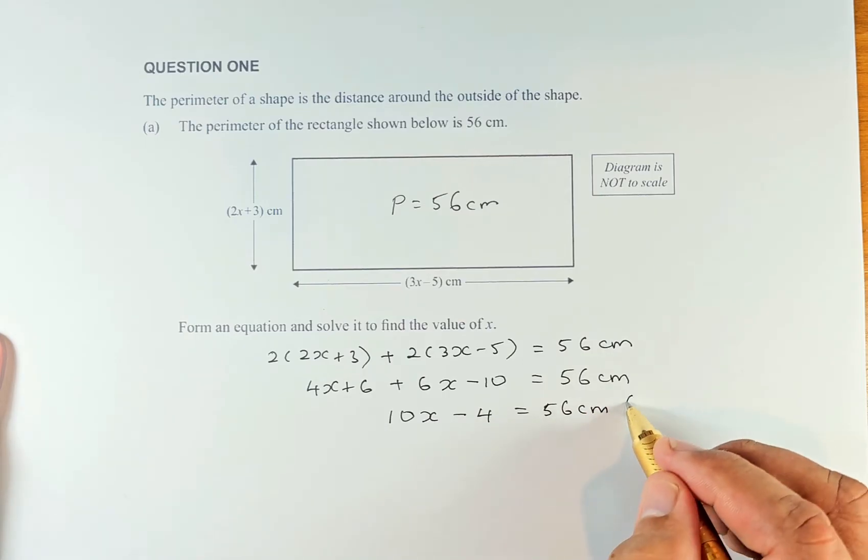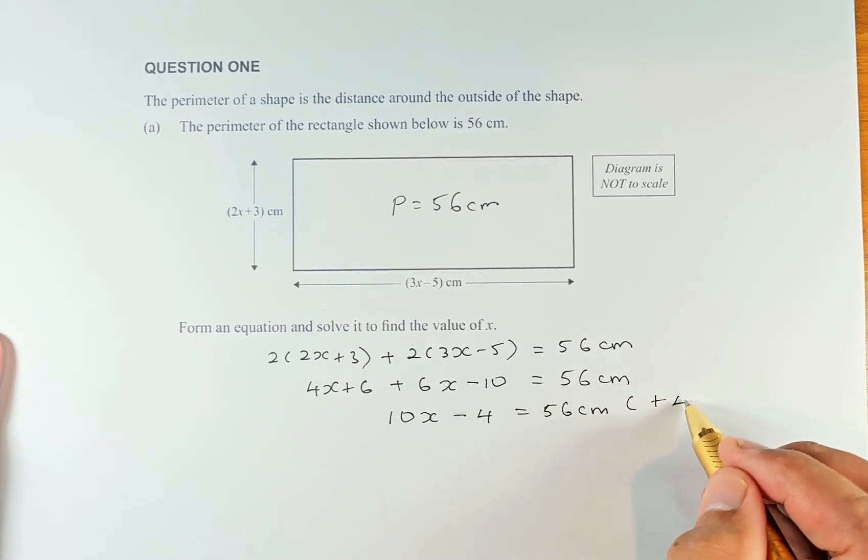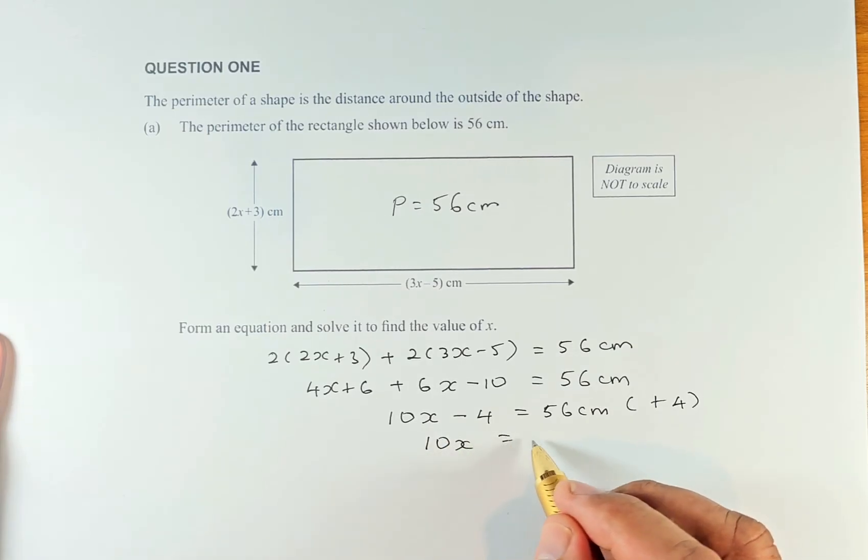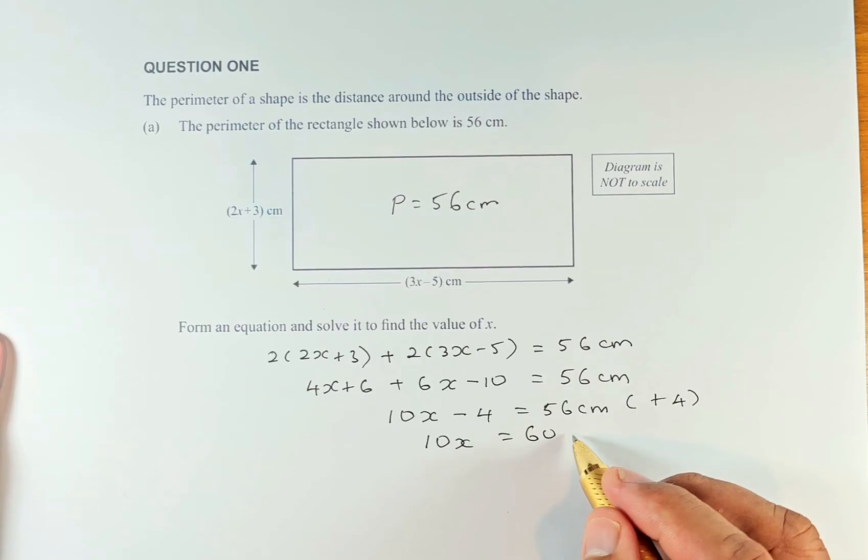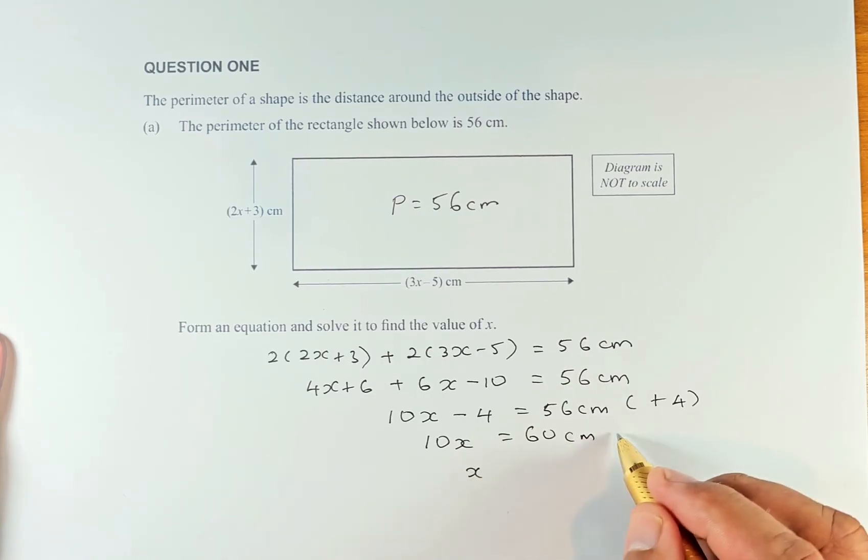To solve this, we add 4 to both sides. So 10x equals 60 because the minus 4 cancels out. 56 plus 4 is 60 cm. To get x, you divide by 10.